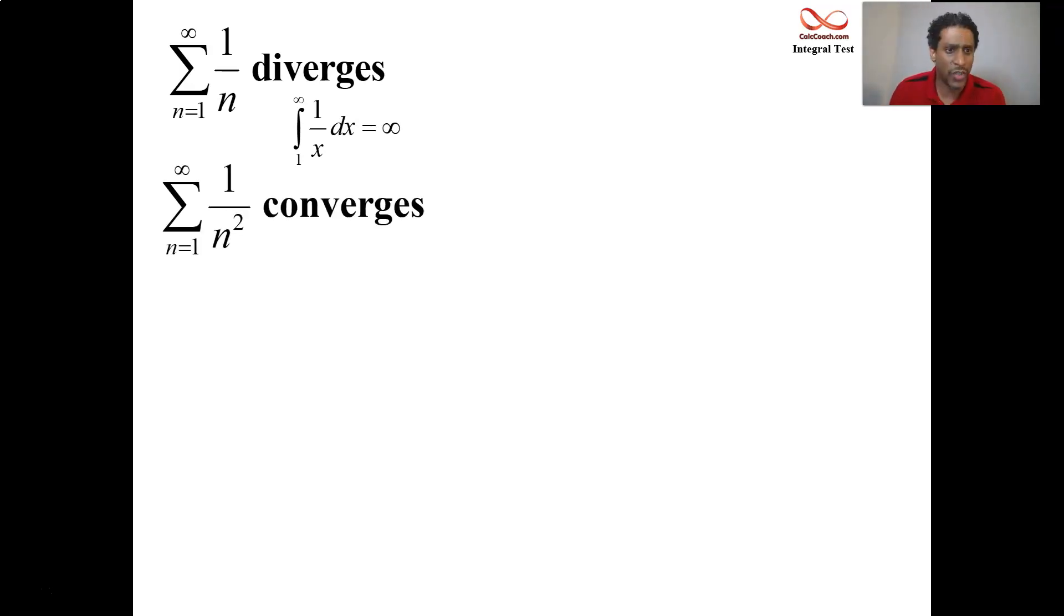We also learned that 1 over n squared converges. The reason why it converges is because the integral from 1 to infinity of 1 over x squared is actually equal to 1. The total area is 1, and this particular series is smaller than that area underneath the graph of 1 over x squared. So it's a subtle change from 1 over n to 1 over n squared.